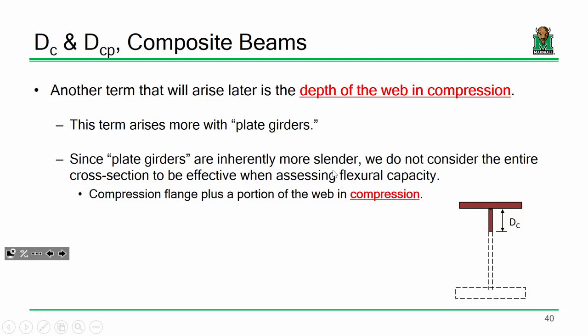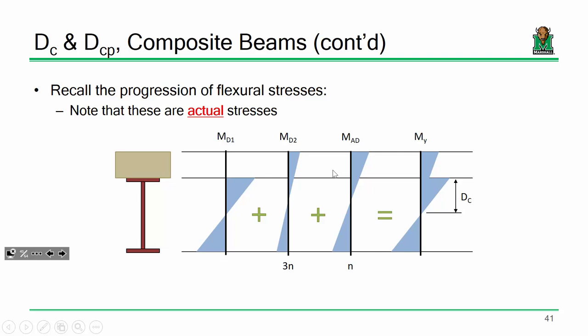D_sub_c is going to become pretty important when we start looking at stability of I-girders — local flange buckling, particularly lateral torsional buckling — because we have a part of the beam in compression, and things in compression like to buckle. There's a lot of background we've got to discuss there. D_sub_c is the depth of the web in compression.